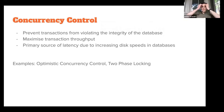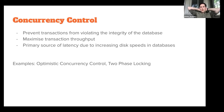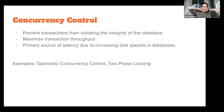The basic idea with the concurrency control algorithm is we want to prevent transactions from violating the integrity of the database, but in so doing, we still want to maximize the transactional throughput. So we basically want something that's both safe and fast. The authors state that the primary source of latency at this point is really the concurrency control algorithm rather than disk access, due to improved disk performance.